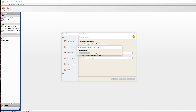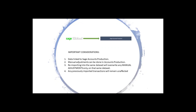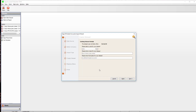On the topic of imports, a few considerations: the data is linked via product link from Sage 50 into Accounts Production. Manual adjustments can then be done in Accounts Production once the data is in there. Re-importing new data from Sage 50 onto the same data set will overwrite manual adjustments on that data set, but any previously imported transactions will remain unaffected by the re-import.